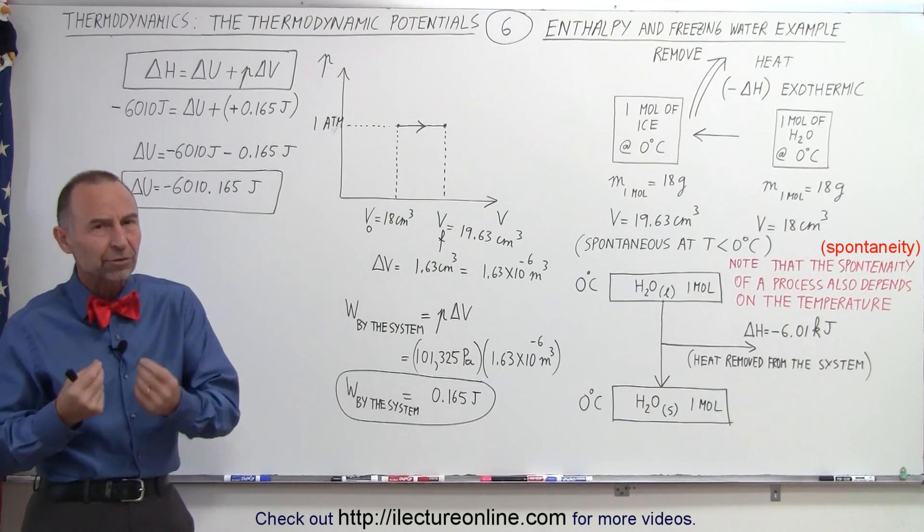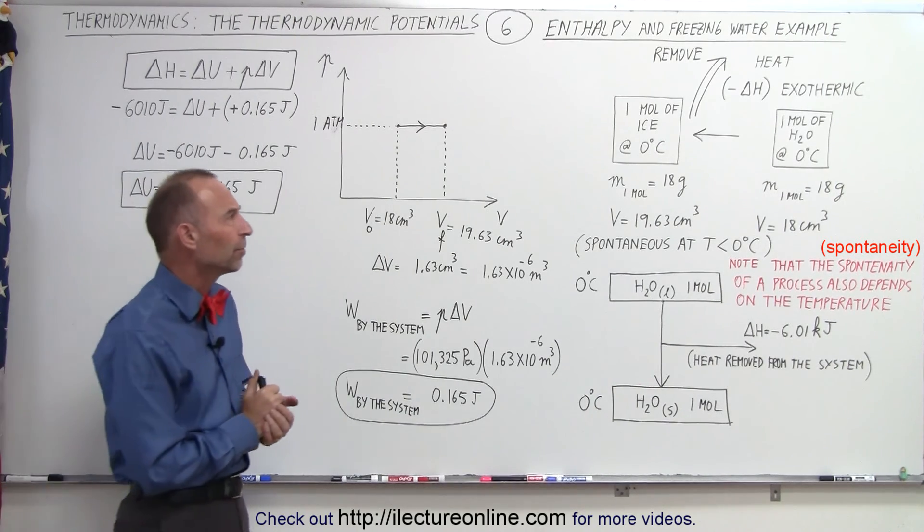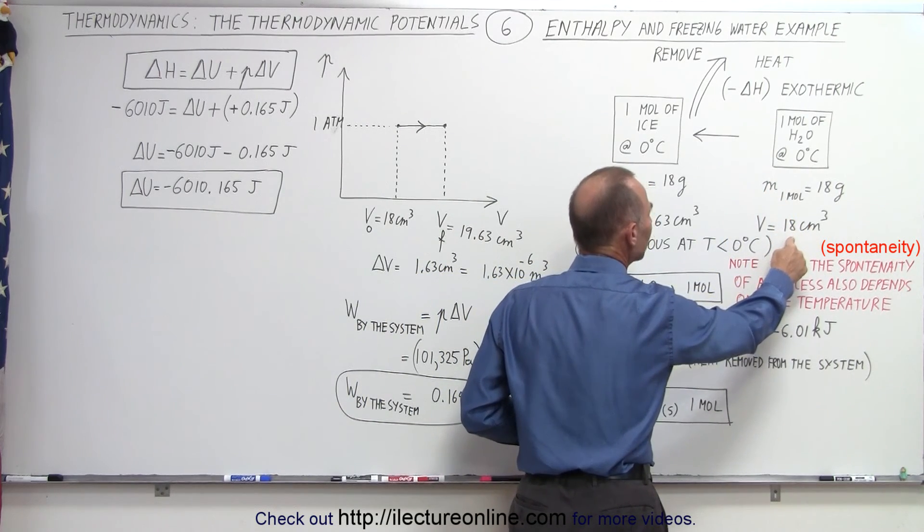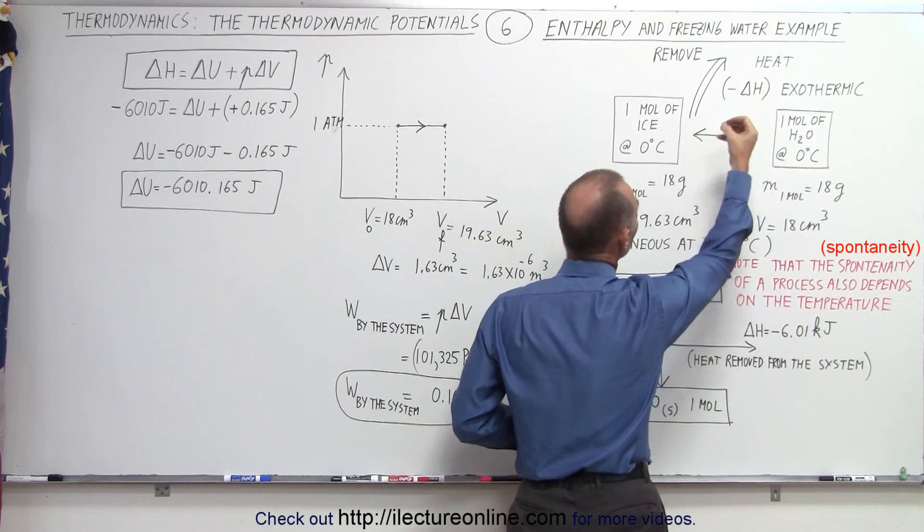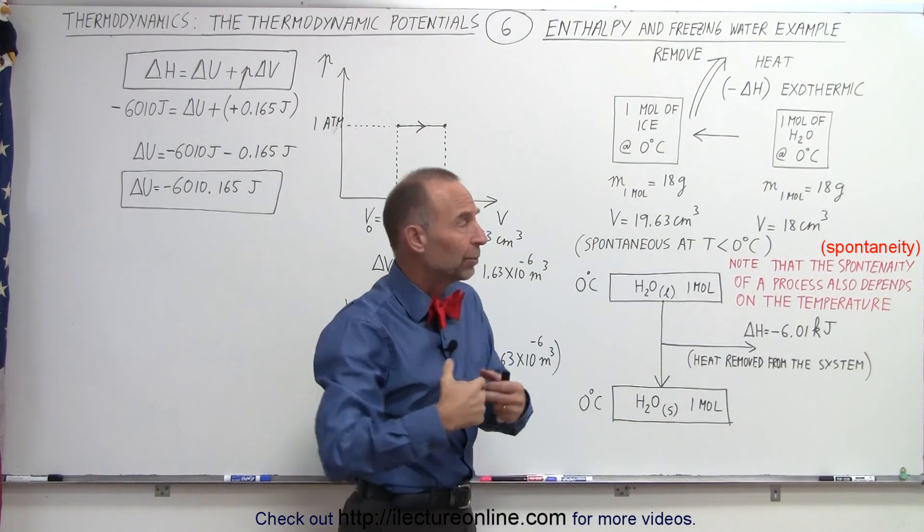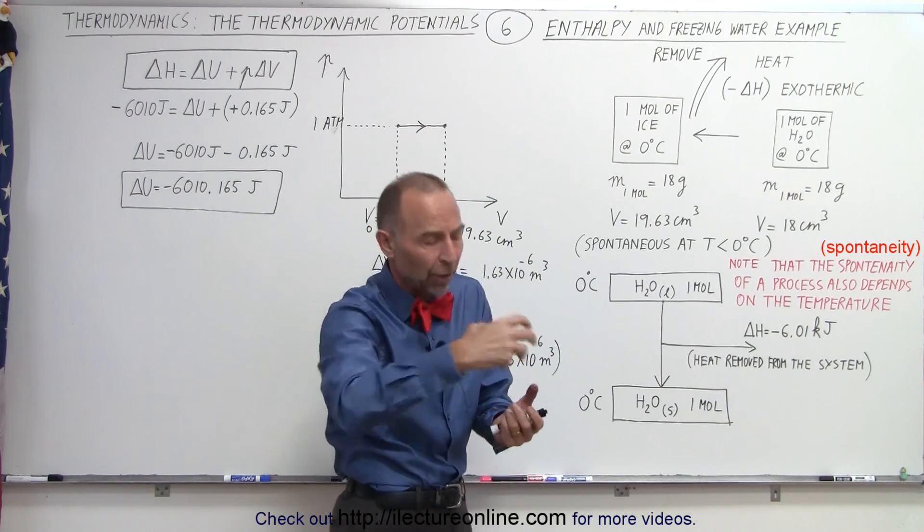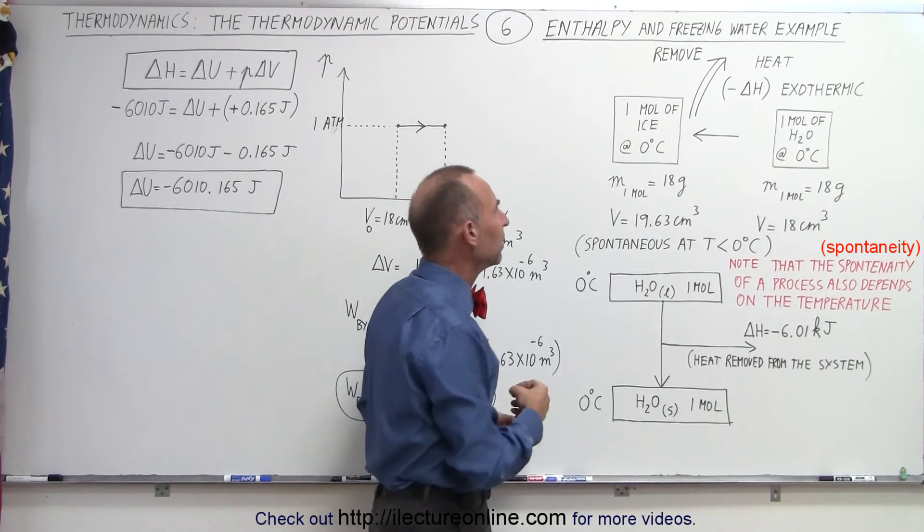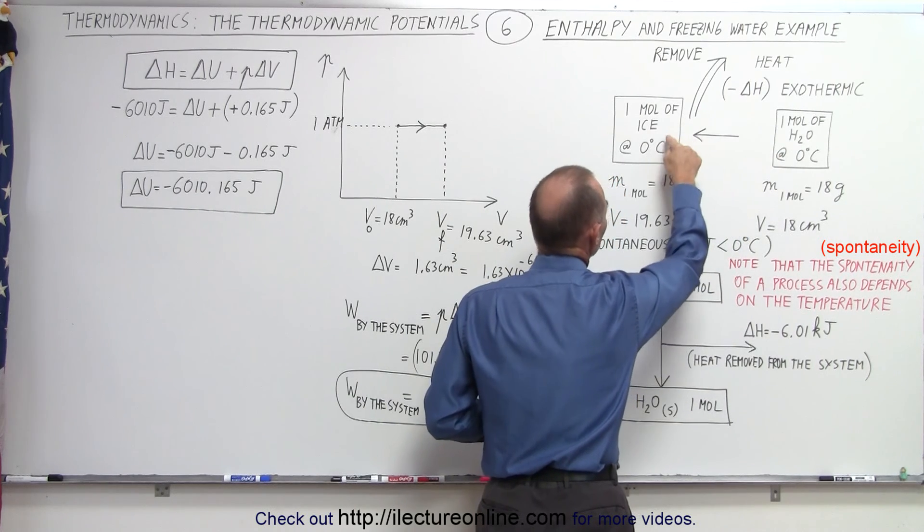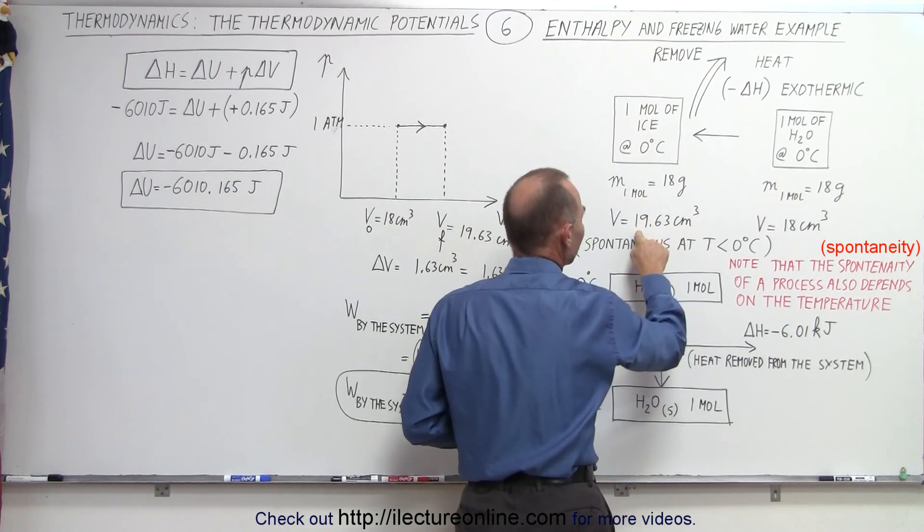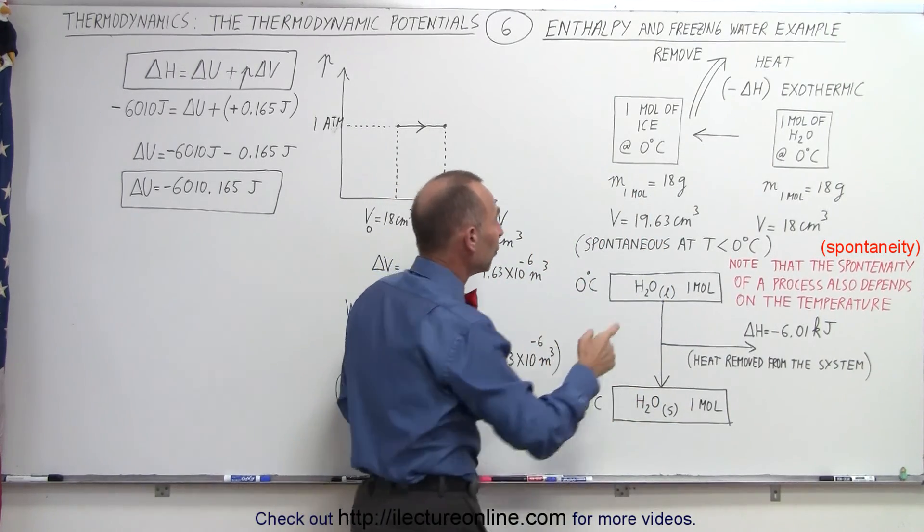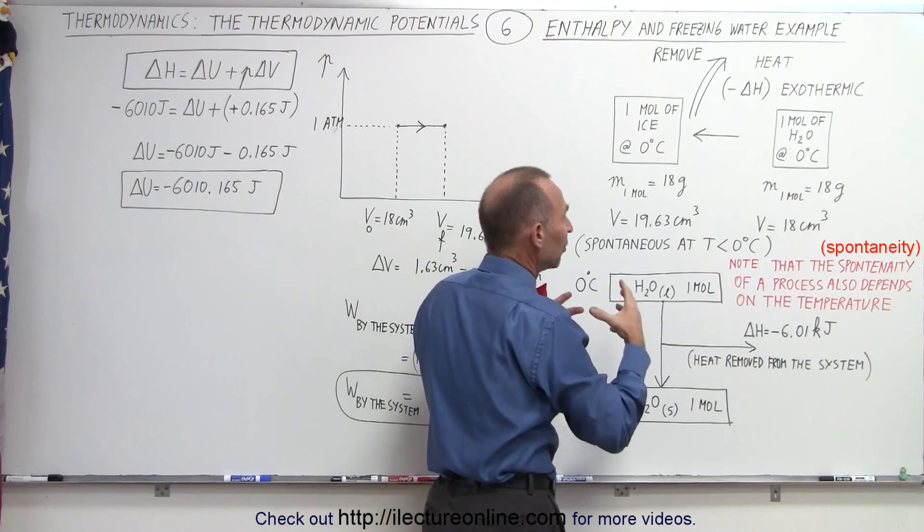And that hopefully will give us a better understanding of what enthalpy is. So here we take one mole of water, which has a volume of 18 cubic centimeters, remove heat from that water. So that means we have a negative delta H. When we have a negative delta H, that means it's an exothermic process. Heat is removed from the substance or from the system. And then we turn the water into ice. Therefore, the ice will now have a volume of 19.63 cubic centimeters for a gain of 1.63 cubic centimeters of volume.